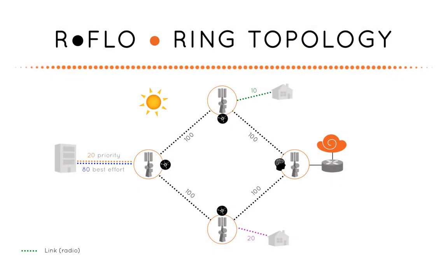Let's take a look at our flow working in a ring topology. Here is a simple backhaul network with four defined services: two residential best effort links and two business services — one high priority 20 megabits per second, used for example for voice over IP and transactional data.